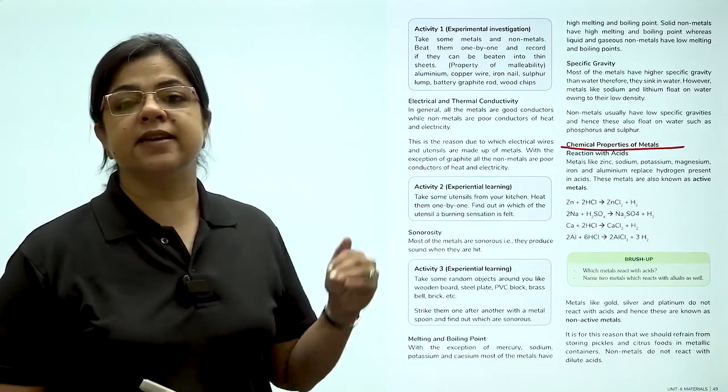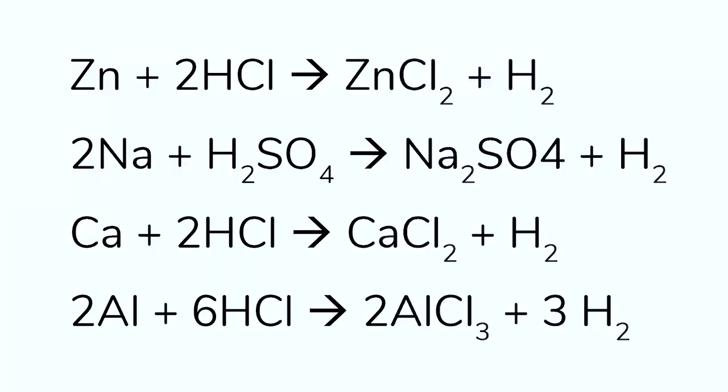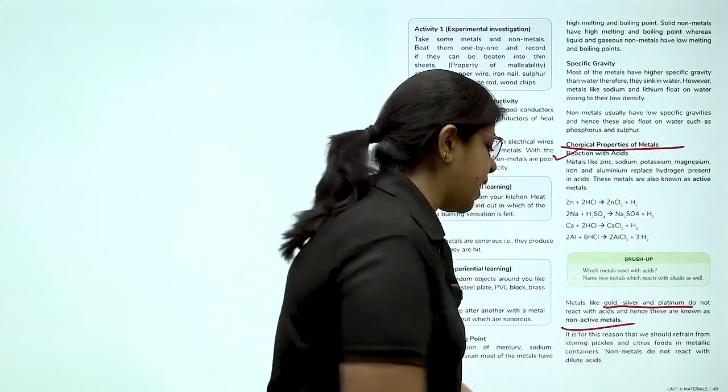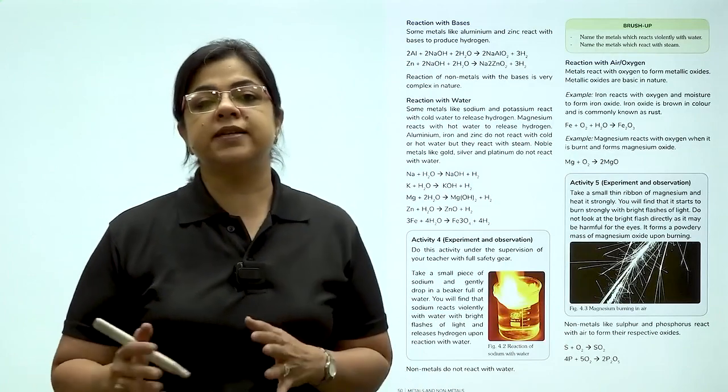First, let us understand the reaction with acids. Zinc plus 2-HCl gives ZnCl2 plus H2. 2Na plus H2SO4 gives Na2SO4 plus H2. Calcium plus 2-HCl gives CaCl2 plus H2. 2Al plus 6-HCl gives 2AlCl3 plus 3H2. From this we see that metals like zinc, sodium, potassium, magnesium, iron and aluminium replace hydrogen present in acids. These metals are also known as active metals. Metals like gold, silver and platinum do not react with acids and they are known as non-active metals. And non-metals do not react with dilute acids.